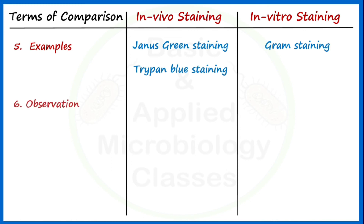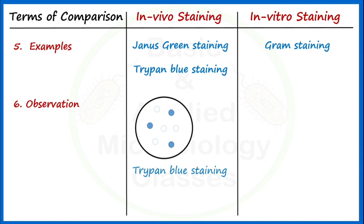The sixth point of difference is general observation. When performing in vivo staining using Trypan blue, dead cells get stained by Trypan blue while living cells do not. This is because Trypan blue is a dye that cannot be taken up by living cells. However, when cells are dead or have damaged membranes, they can easily take up this stain and get stained. This makes it a very good example of a vital stain used to distinguish between live and dead cells in a specimen.